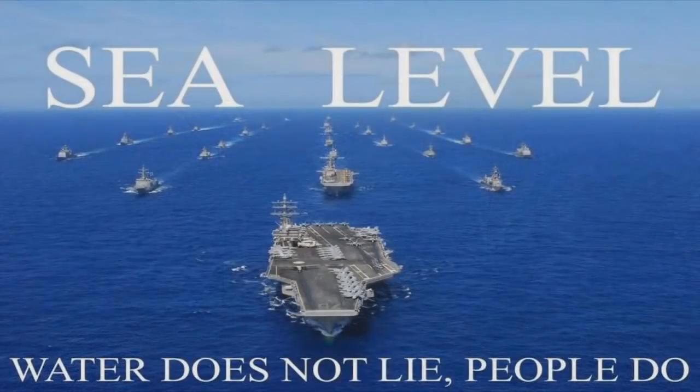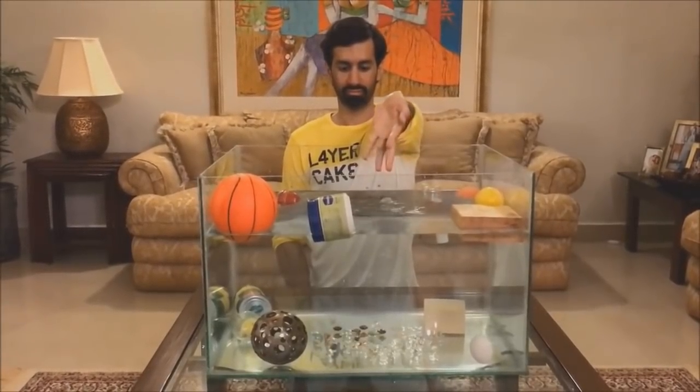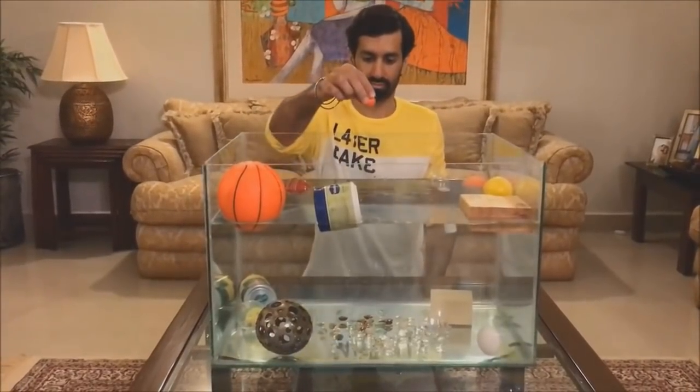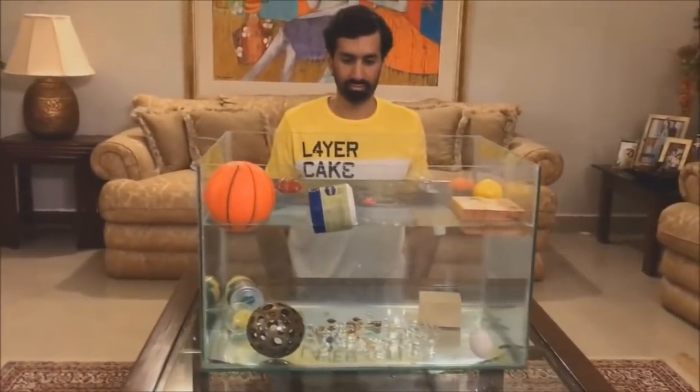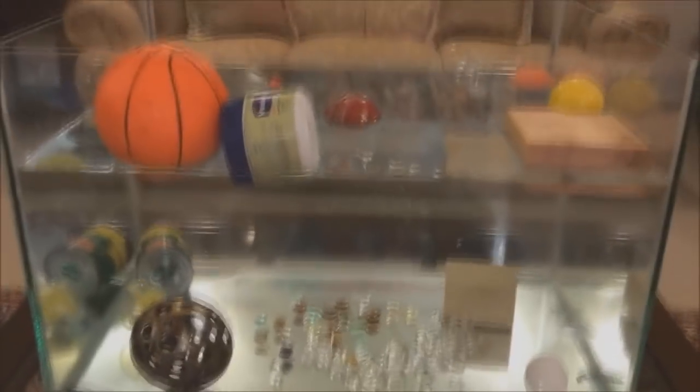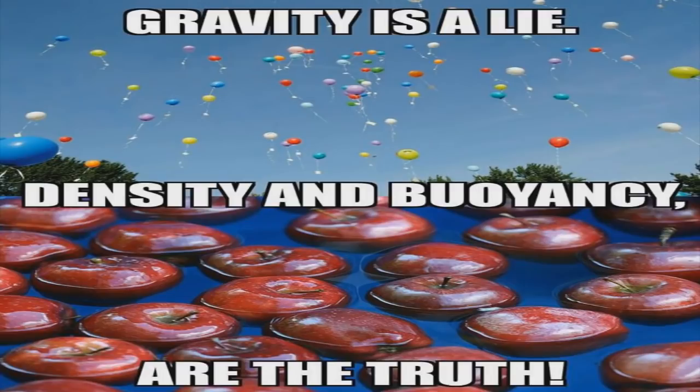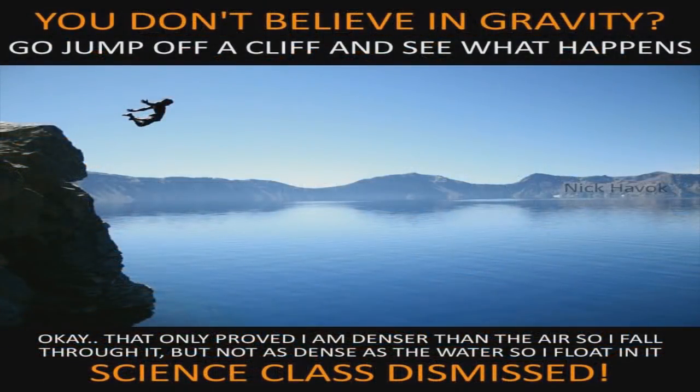This is why a tiny pebble sinks to the bottom of the ocean, but gigantic cruise ships and aircraft carriers stay afloat on the surface, because even though a pebble is so small, its mass relative to its volume, its density, is more than water, so it sinks. And even though a cruise ship is so large, its mass relative to its volume is less than water, so it floats. If Newton's apple had landed in a puddle instead of on his head, he would have seen the apple only fell through the air because it was denser than the air, but then floated on top of the water because it was less dense than water.